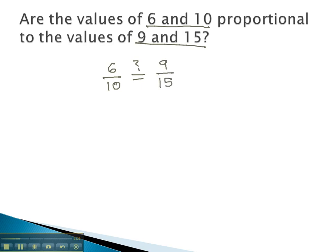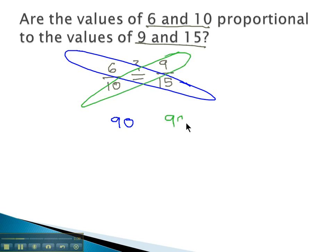Well, the cross product can tell us that. The cross product says multiply in this first diagonal, 6 times 15, which is 90, and multiply the other diagonal, 9 times 10, which is 90. And are those equal? Yes, they are.